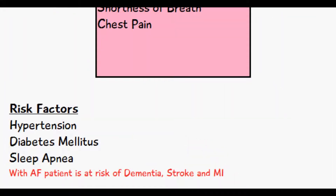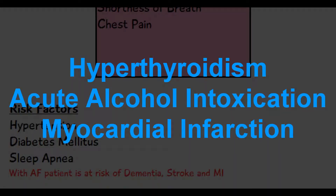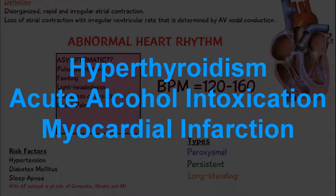Atrial fibrillation is usually more common in men and in people above 60 years of age. Risk factors include high blood pressure or hypertension, diabetes mellitus, and sleep apnea. It can also occur alongside other diseases such as hyperthyroidism, acute alcohol intoxication, or during a myocardial infarction, where it can be one of the presenting symptoms.